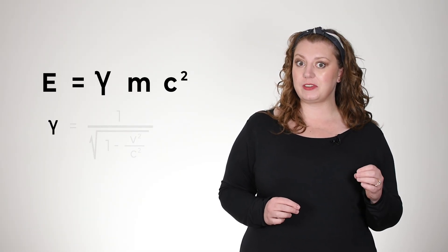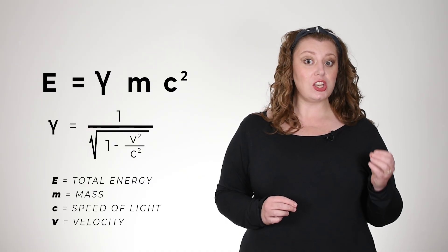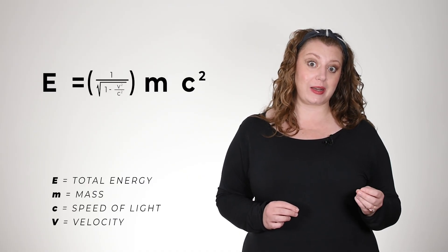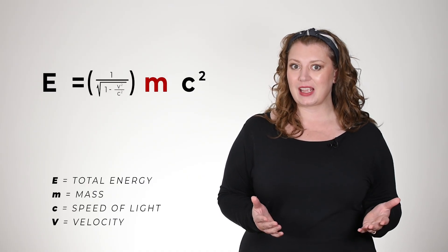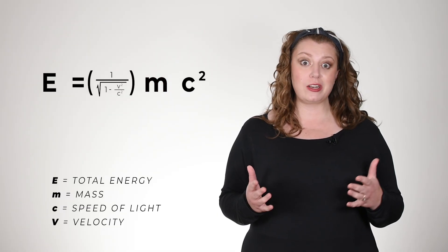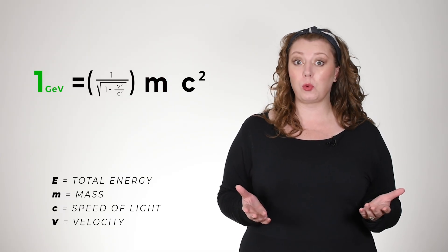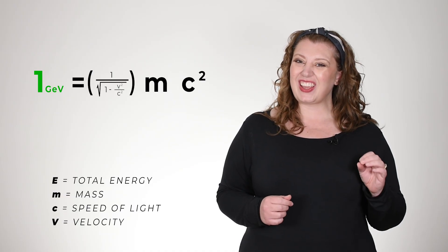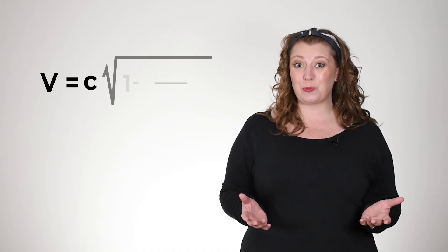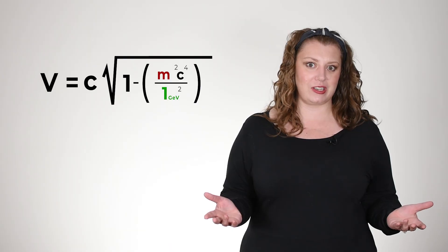Now let's get a bit more specific. We can calculate the speed of a neutrino from its energy, using Einstein's special relativity equations if we know its mass. Let's run the numbers for a neutrino we'd make at Fermilab's particle accelerators, and give it an energy of 1 GeV.